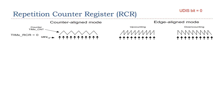Update events (UEV) are generated with respect to counter overflows and underflows if the update disable bit (UDIS) equals 0 in the timer CR1 register. If the UDIS bit is 1, generation of update events is disabled. In addition, update events are only generated when the repetition counter has reached 0. Specifically, when the repetition counter is 0, an update event is generated for each overflow or underflow.